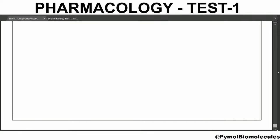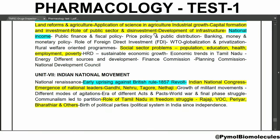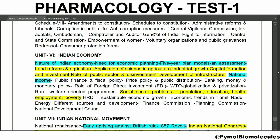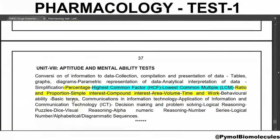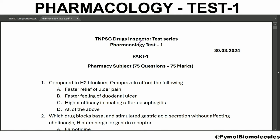In the general studies: Indian economy, social sector problems, population, education, health, employment, and poverty. In the aptitude and mental ability test: area and volume. This test contains three parts. First part is the pharmacy part.